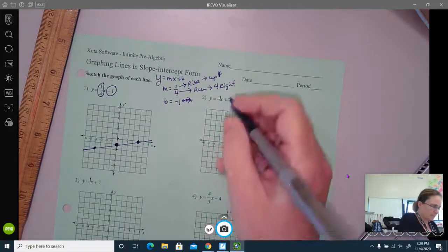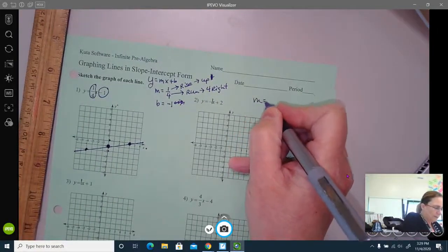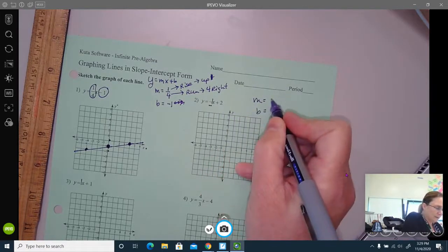So my slope here and my y-intercept. My slope is negative one. And my y-intercept is positive two.